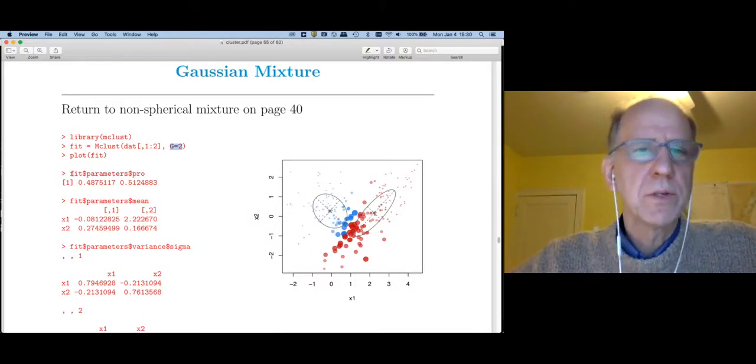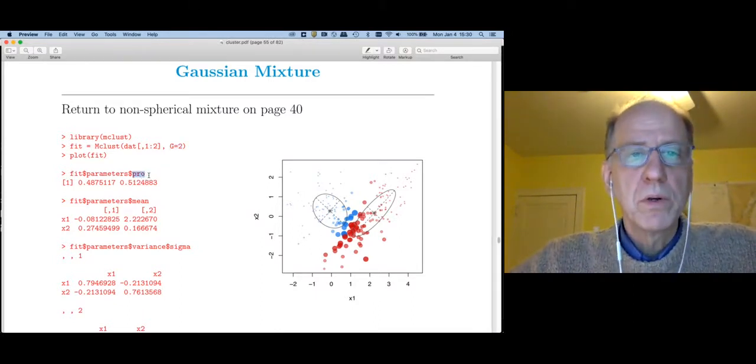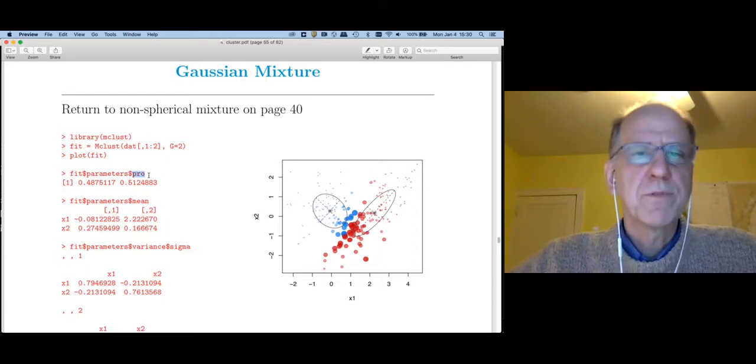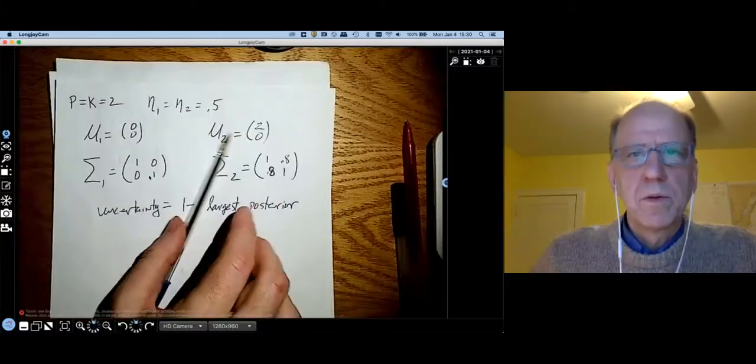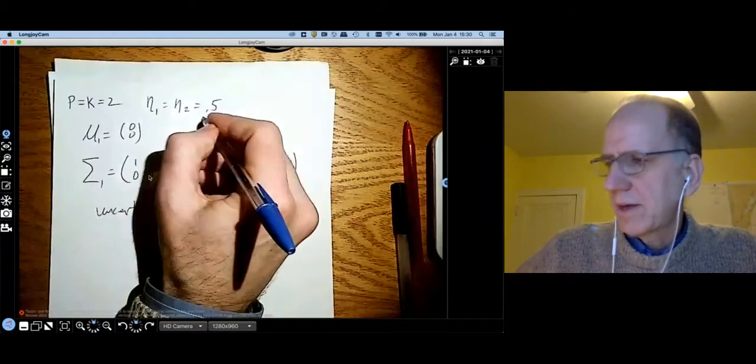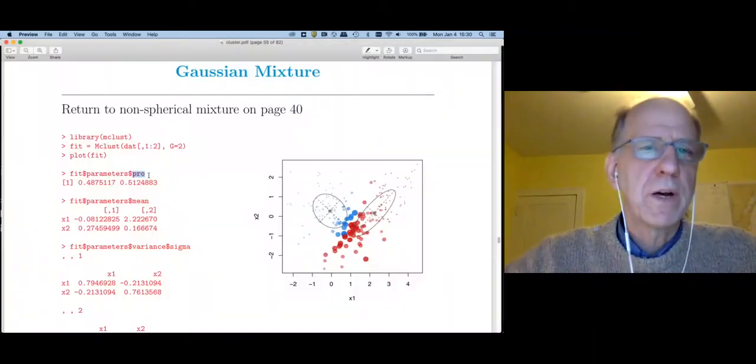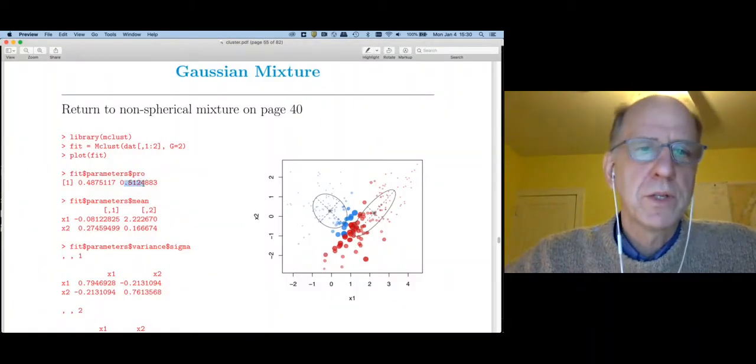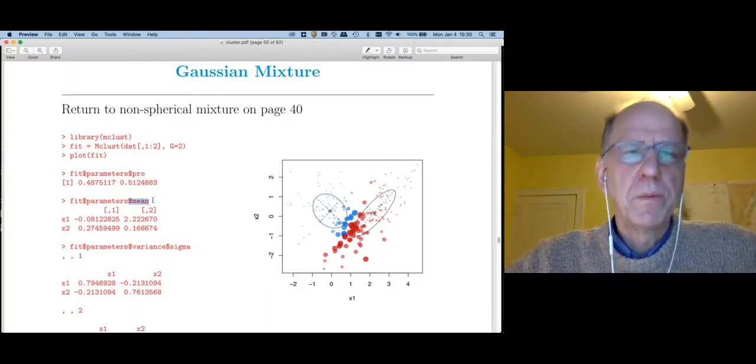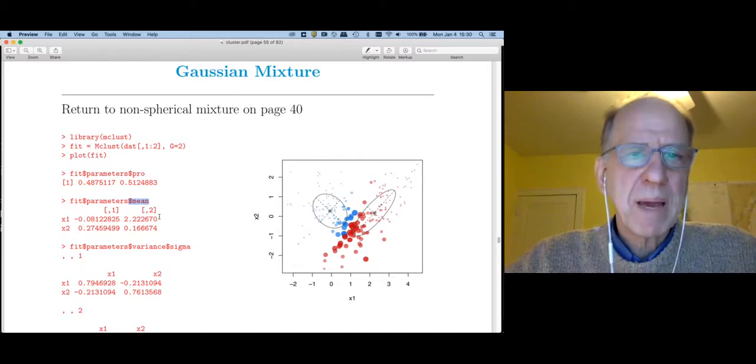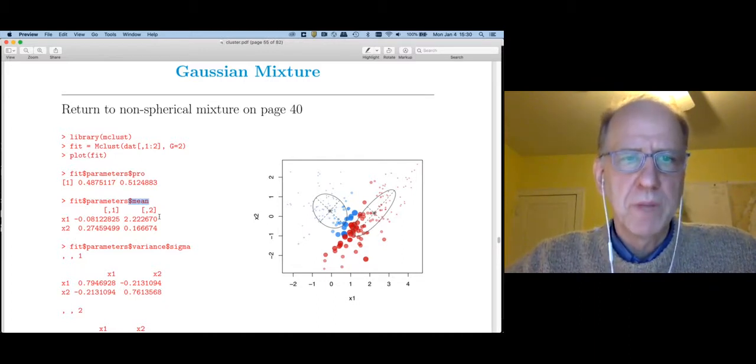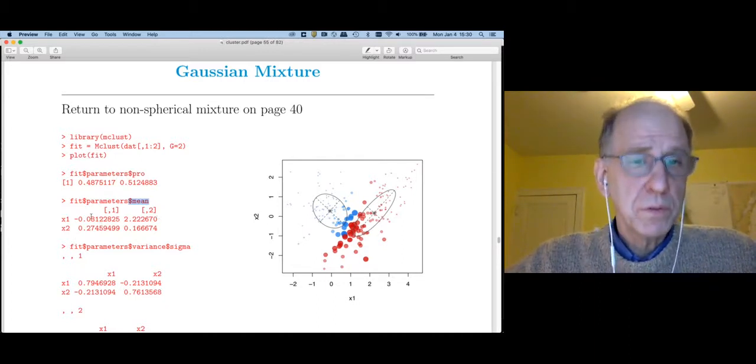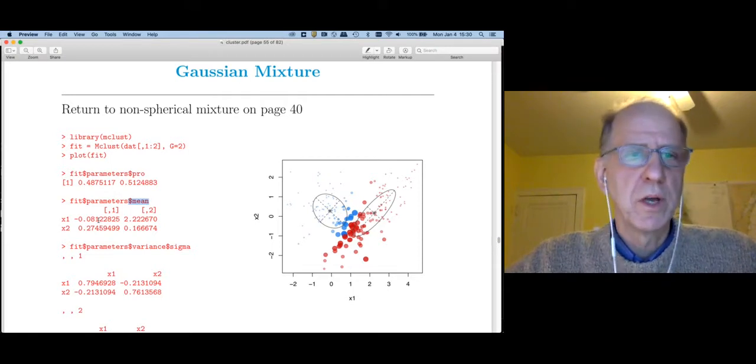Now let's go take a look at the actual parameter estimate. Fit dollar parameter gives those estimates. Pro, you'll remember, probably stands for proportion. These are the priors. You'll remember that I chose the priors to both equal 0.5 and they're fairly close to that.